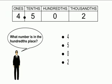Now looking at this number, 4 and 502 thousandths, what number is in the hundredths place? The zero would be in the hundredths place.